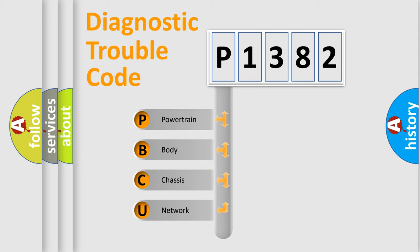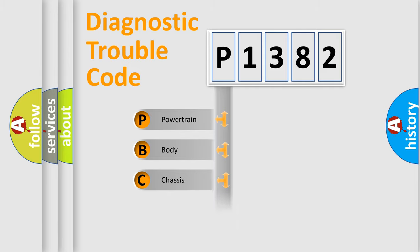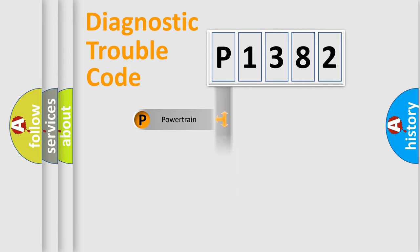We divide the electric system of an automobile into four basic units: Powertrain, Body, Chassis, and Network.